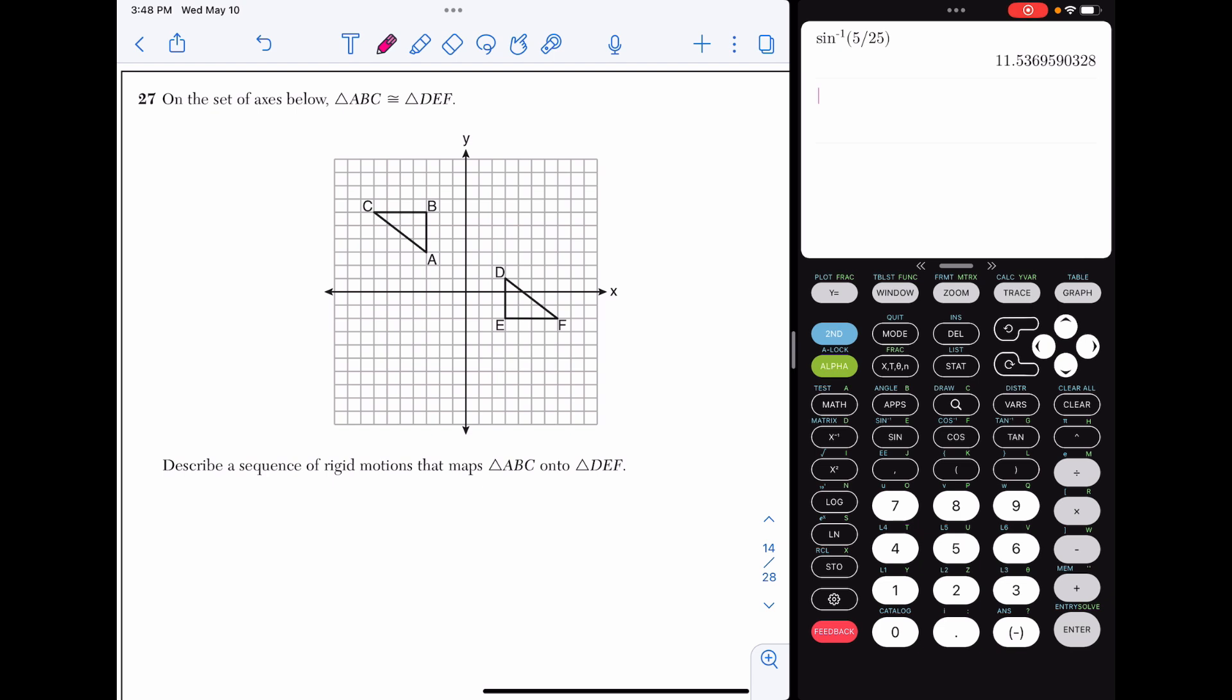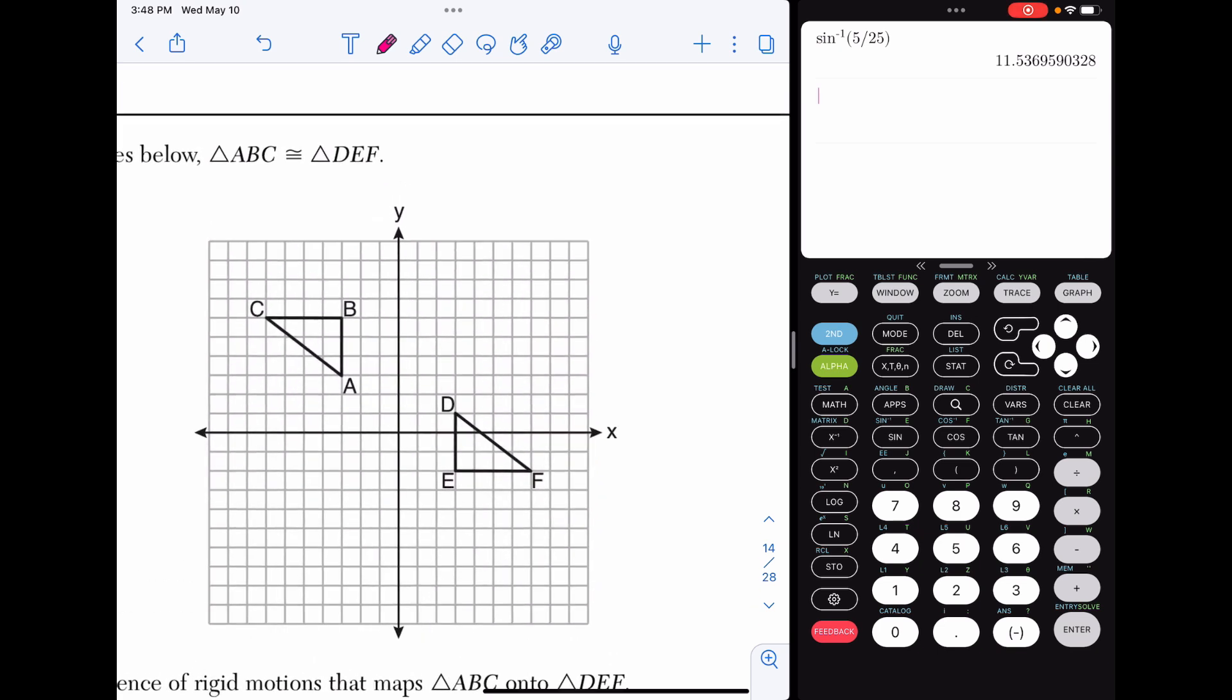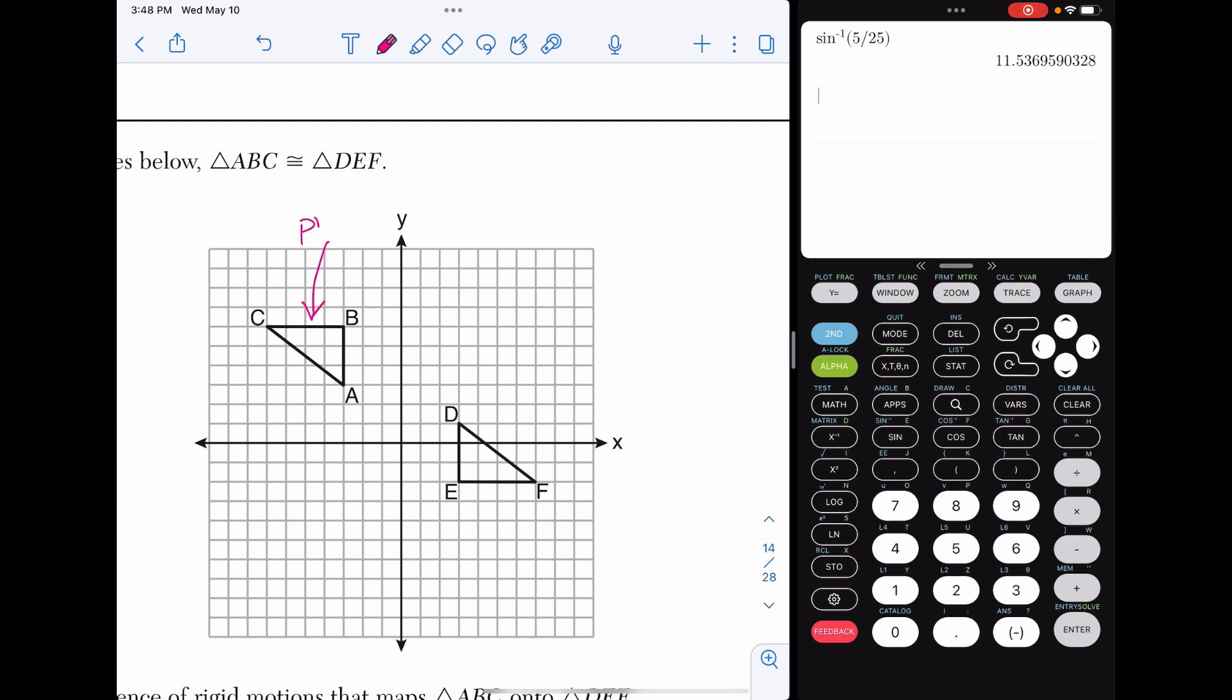Alright. For number 27, on the set of axes below, triangle ABC is congruent to DEF. Describe a sequence of rigid motions that maps ABC onto DEF. So just so you know, a sequence can be one or more rigid motions. And sometimes on these questions, there are multiple correct answers. So I'm just going to give an example of one, but there are certainly more. So the first thing I'm going to start with is recognizing that ABC is the pre-image and DEF is the image. I don't have the prime symbols here, but the way I read the question that we're mapping ABC onto DEF, that tells me ABC is the pre-image.